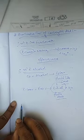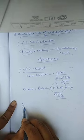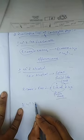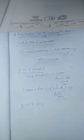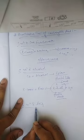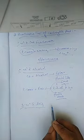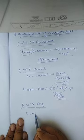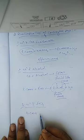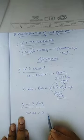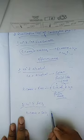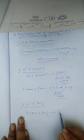Another thing we can do for qualitative identification of carboxylic acid is the reaction with ferric chloride. So what will happen when we react the carboxylic acid with ferric chloride? Suppose this is your carboxylic acid and we have added ferric chloride to that solution.